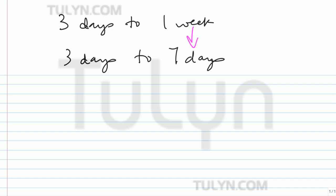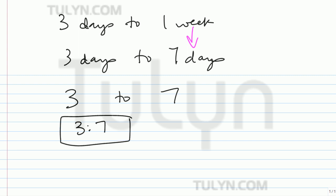Okay, now rewrite this over. Three to seven has a ratio, and that's going to be three to seven. Ratio is always shown by these two dots. But as a unit rate, we can write three over seven. That's a unit rate. They asked for ratio.